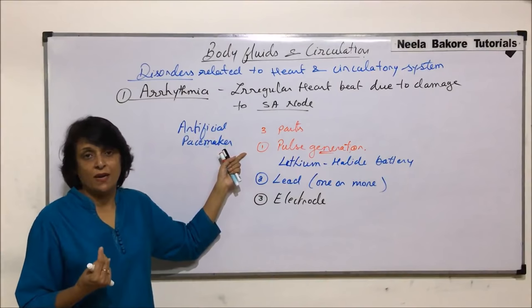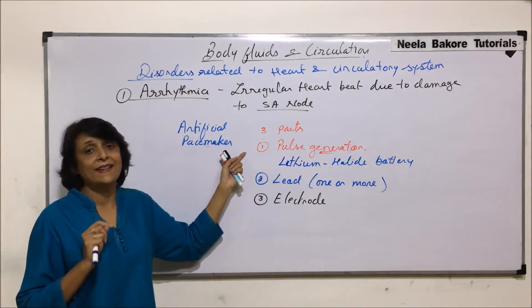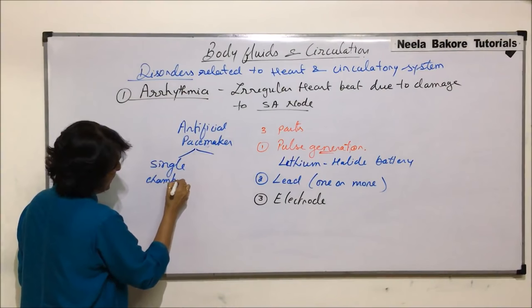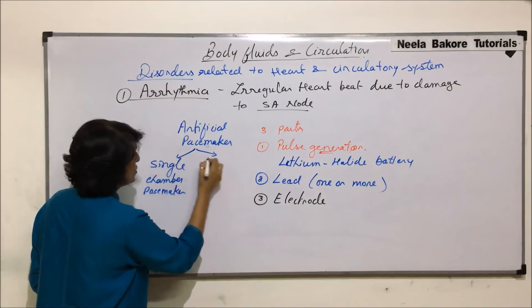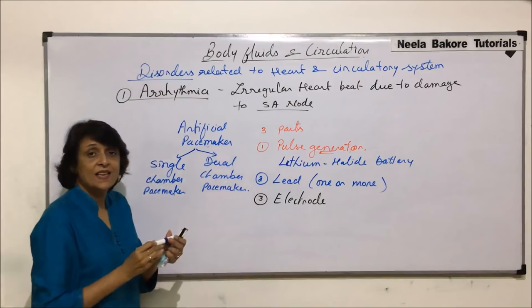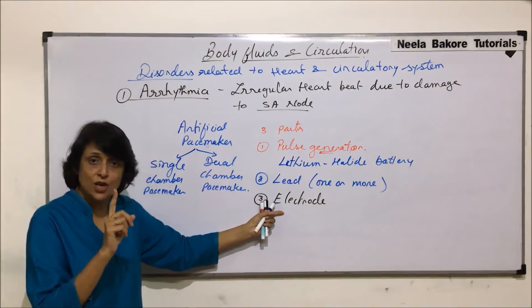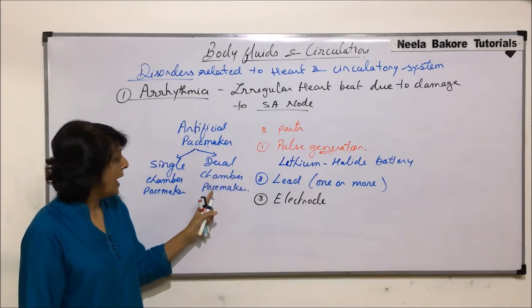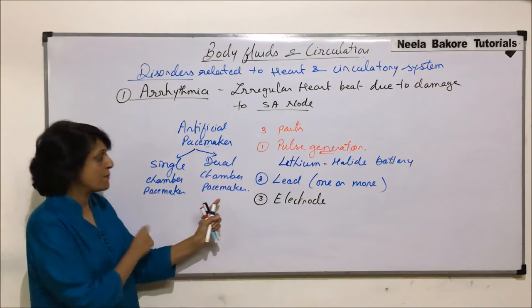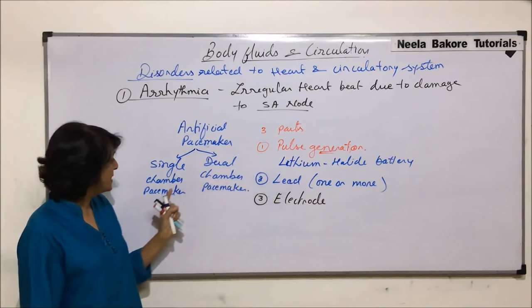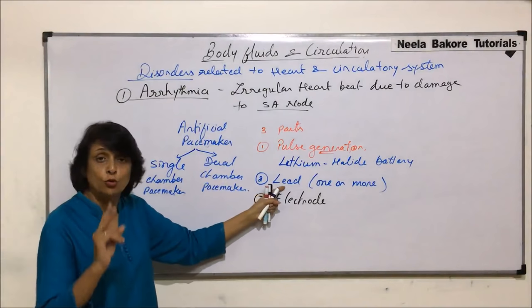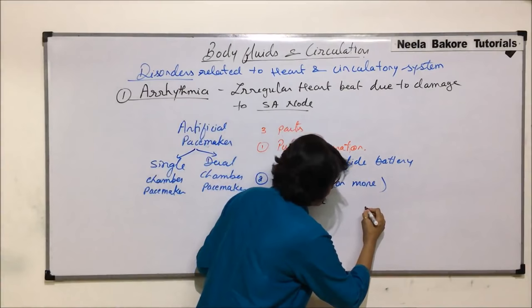There are two types of pacemakers: a single chamber pacemaker and a dual chamber pacemaker. In a single chamber pacemaker, the electrode is connected to only one chamber — invariably the ventricle. In a dual chamber pacemaker, it is connected to both the auricles and the ventricles. Depending on the type, the number of leads changes: a single chamber pacemaker has one lead, while a dual chamber pacemaker has two leads.